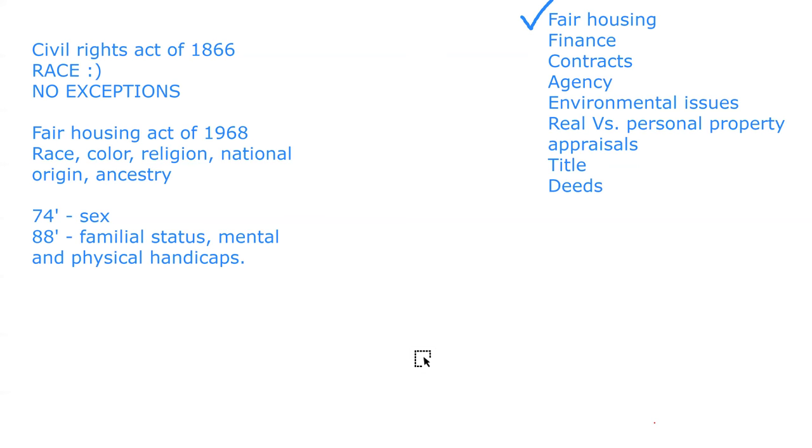They may also ask if a contract would be void if a lead-based paint disclosure wasn't signed — no, the buyer could still purchase the home. The seller can be held liable if they aren't disclosing, but even if they don't have knowledge, they should put down on paper that they have no knowledge or records. Not having the disclosure doesn't prevent the transaction from going forward.